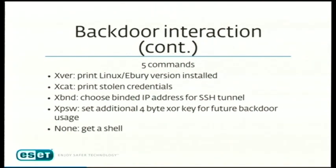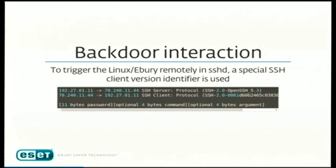The commands supported by the backdoor include: xver, which prints the installed version — they do versioning, which is helpful for tracking them; a command to print stolen credentials; xbind, which lets operators choose which IP address an SSH tunnel comes out from, a feature they added because OpenSSH didn't support it and they need to support many old POSIX systems; and xpassword, for setting a new key for future backdoor use. With no command at all, you get a shell — they trigger it using the version string.